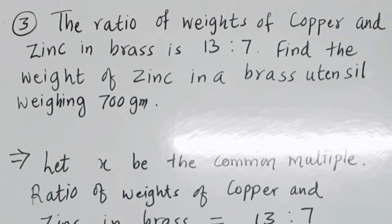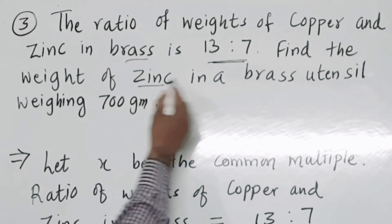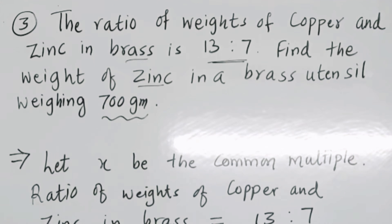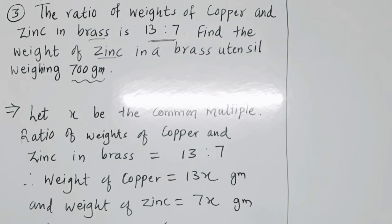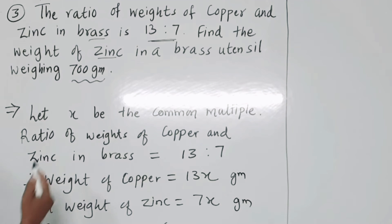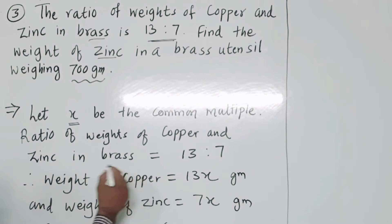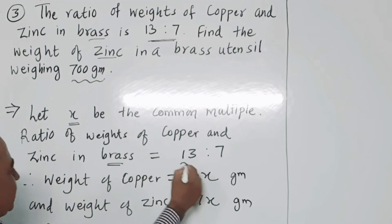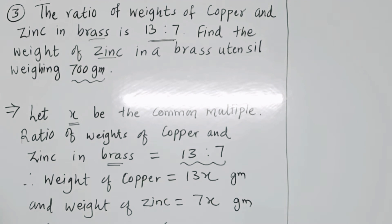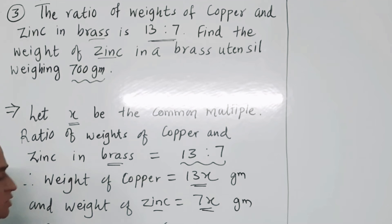Third example: The ratio of weight of copper and zinc in brass is 13 to 7. Find the weight of zinc in a brass utensil weighing 700 grams. When a ratio of two quantities is given, assign a common multiple. Let x be the common multiple. So weight of copper equals 13x grams and weight of zinc equals 7x grams.